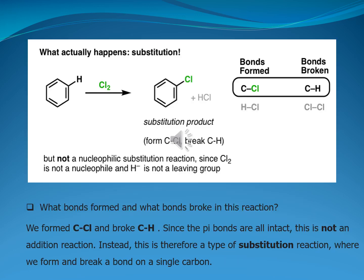So what actually happens? That is substitution — when the benzene molecule is treated with chlorine, it gives a substitution product, in which formation of the carbon-chlorine bond and the breakage of the carbon-hydrogen bond takes place, but not a nucleophilic substitution reaction, since chlorine is not a nucleophile and hydride is not a leaving group. Since the pi bonds are all intact, this is not an addition reaction. Instead, this is a type of substitution reaction where we form and break a bond on a single carbon atom.